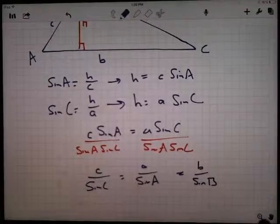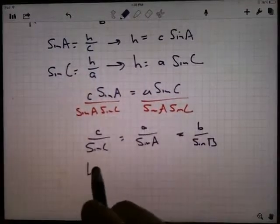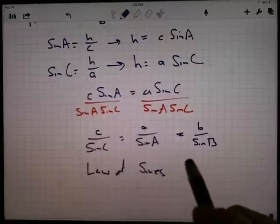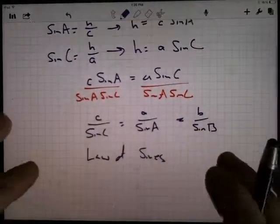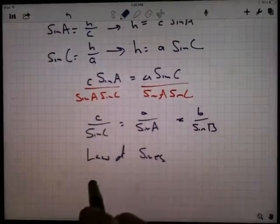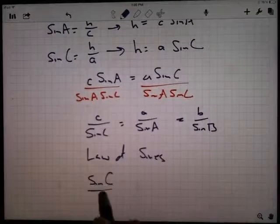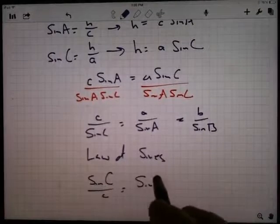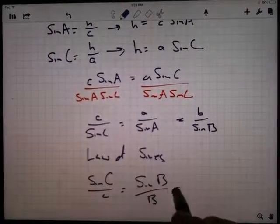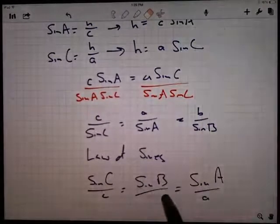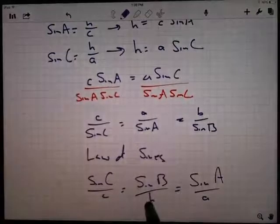Now, this is what's called the law of sines. This is it. A over sine A equals B over sine B equals C over sine C. Sometimes it's written in the reciprocal. Sometimes if you flip everything over, you'll see it as sine C over C equals sine B over B equals sine A over A.